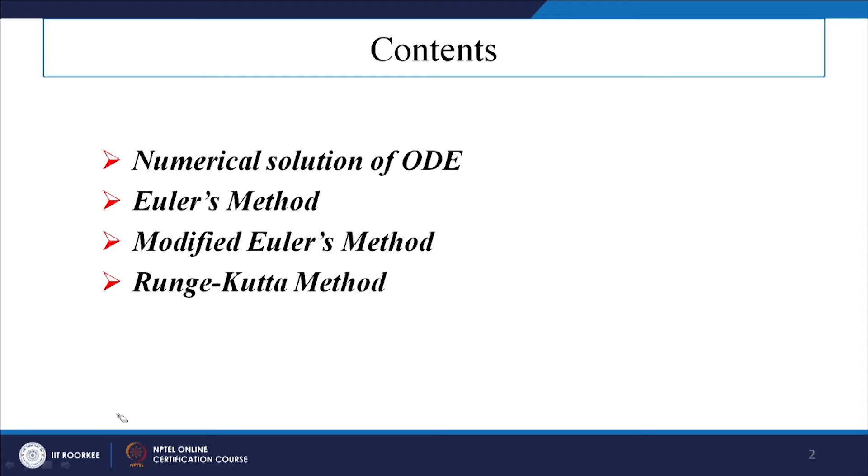In the last lecture I discussed that whenever we have higher order differential equations with initial conditions, we can reduce all the higher order differential equations into a set of first order differential equations. For first order equations we can use Picard's method or Taylor series expansion. We then proceed to improve: Picard's → Euler's method → modified Euler's method → Runge-Kutta method.